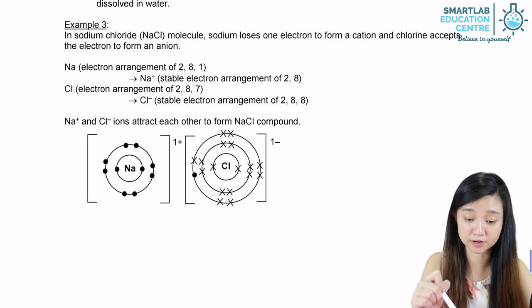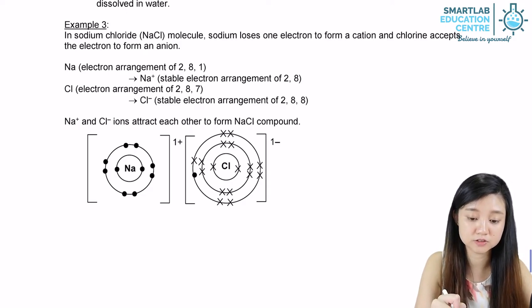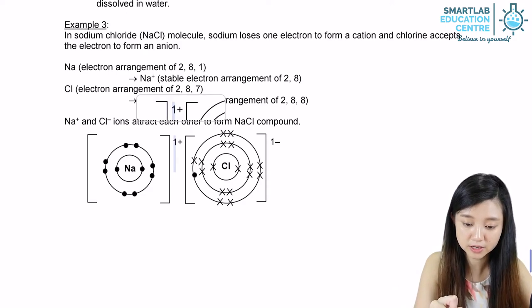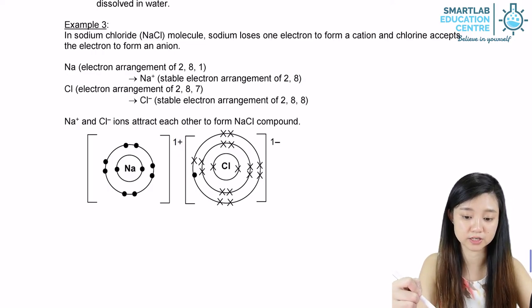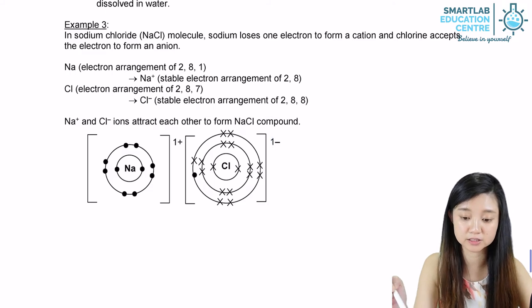As we see from the diagram below, sodium gives away one of its electrons, hence there is a +1 charge, while chlorine gains one electron and has a -1 charge.